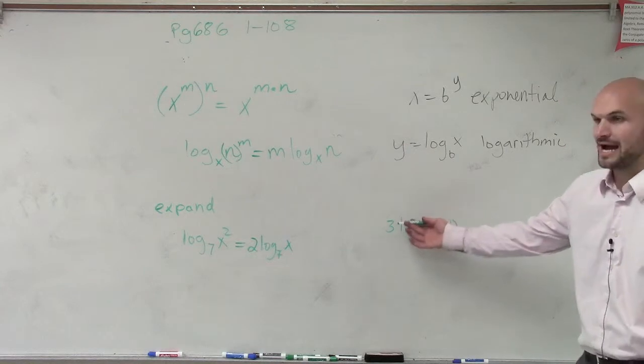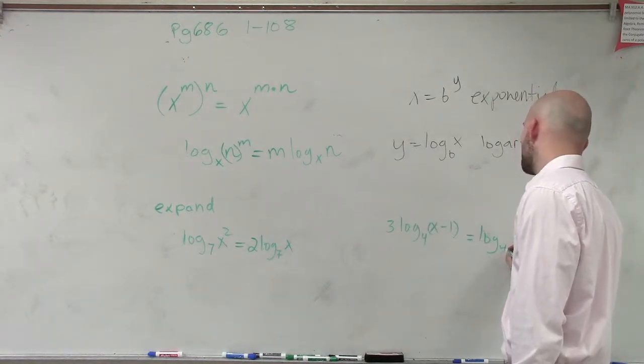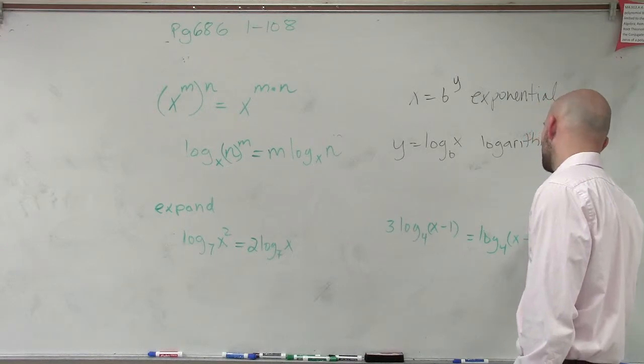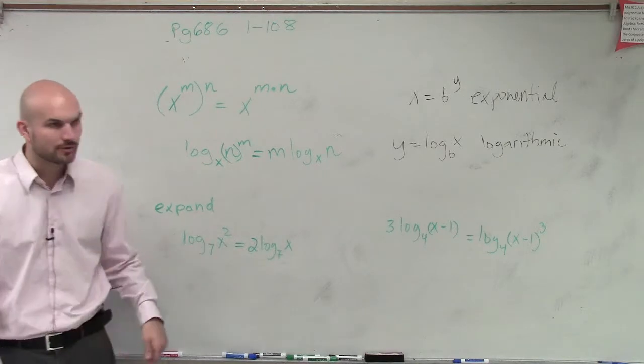And then here, I can condense it by bringing this right back up there to log base 4 of x minus 1 cubed. So that's how you can quickly expand and condense using the power rule.